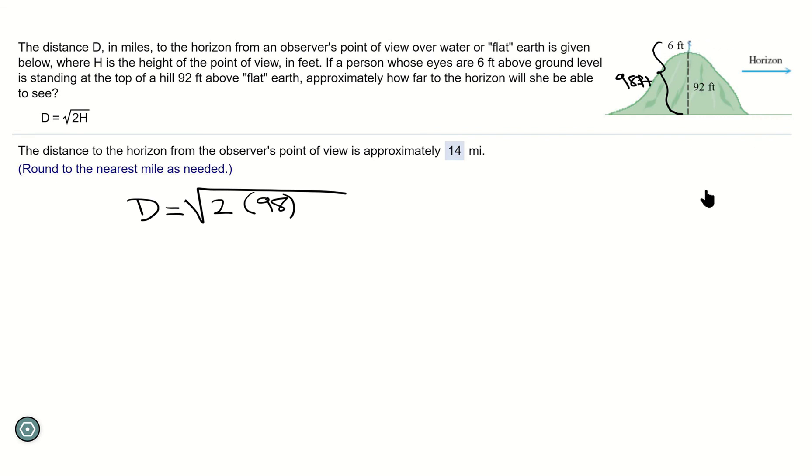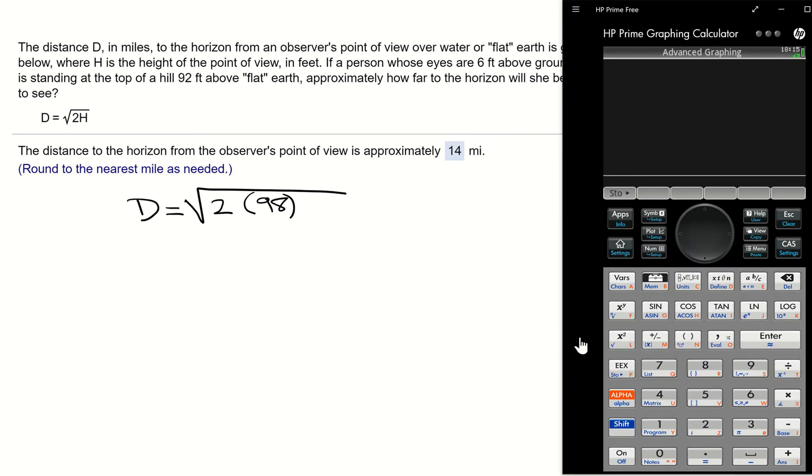Now we just have to carefully plug that into a calculator and round to the nearest mile. We're going to start with the square root, which is usually shift x-squared on most calculators.